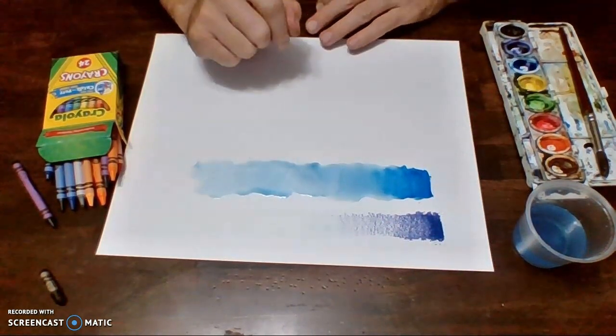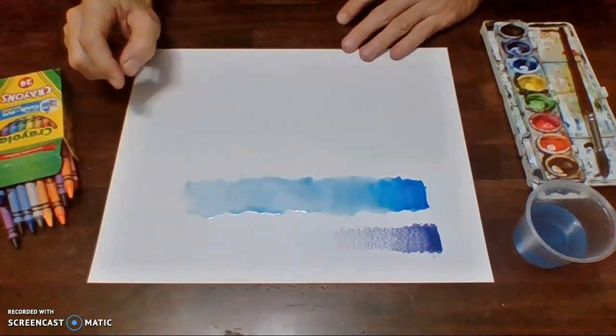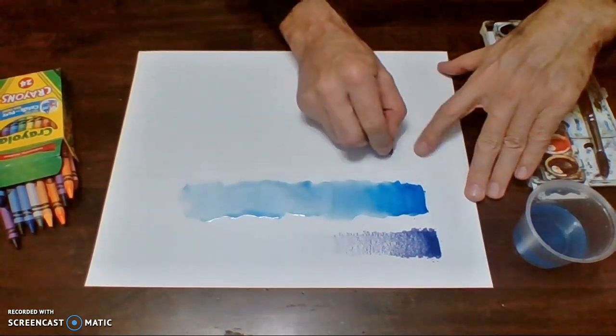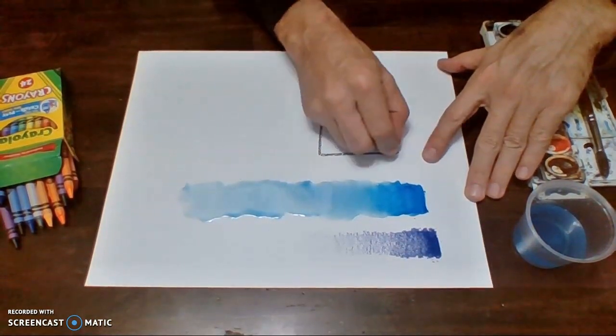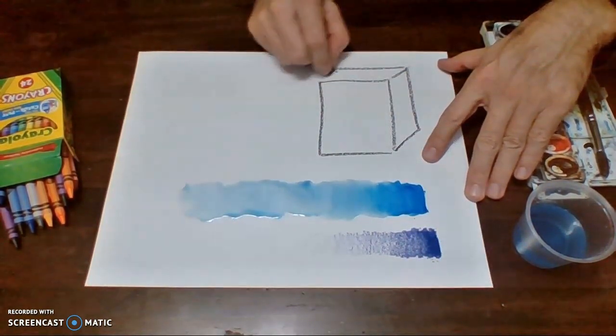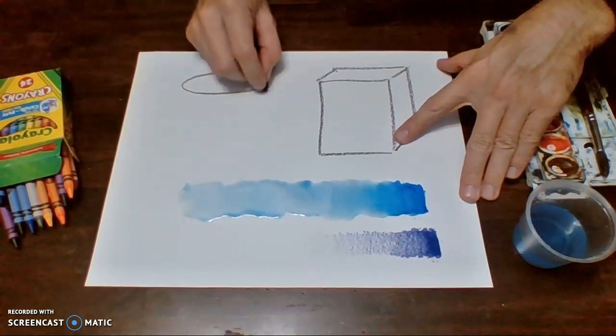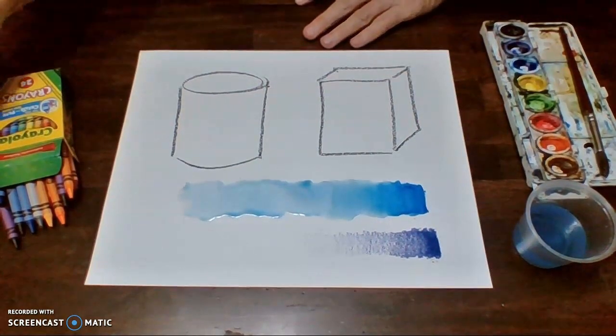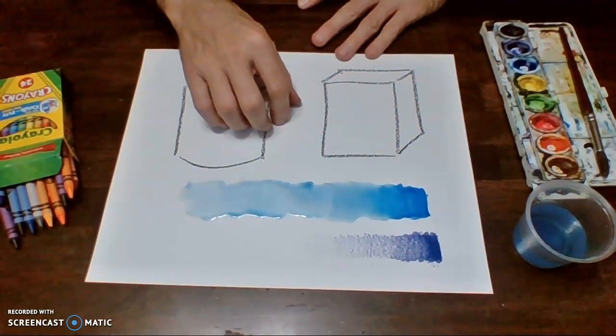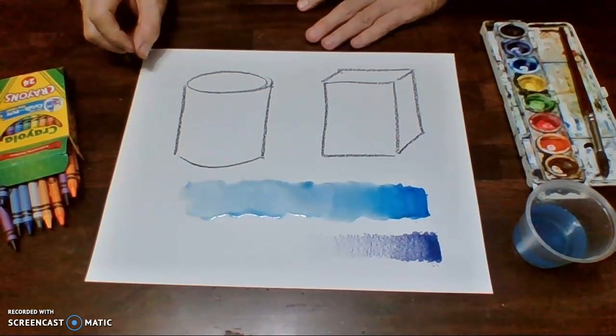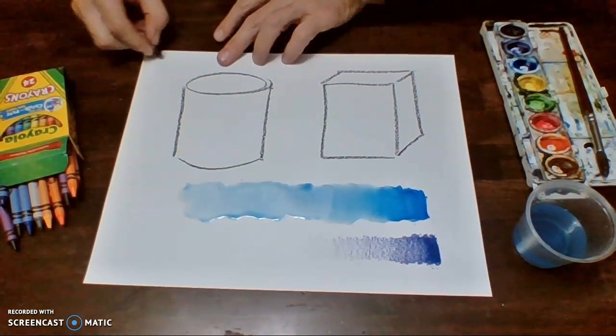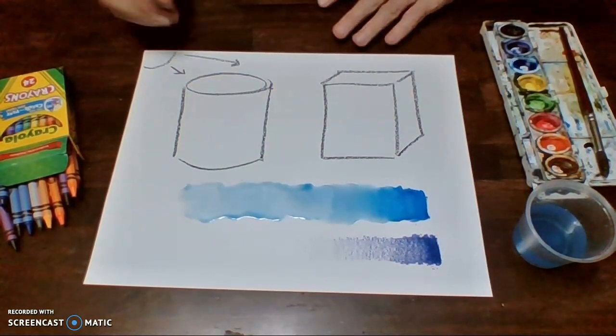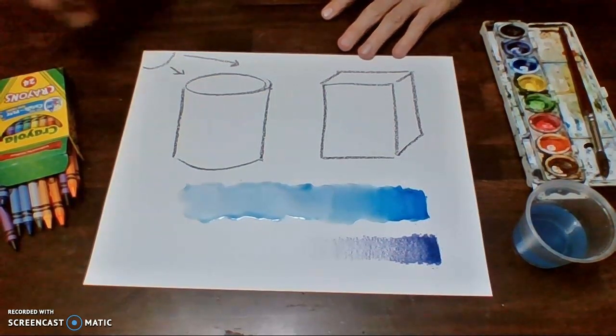Now, if you finish doing your value scales, we're going to move on to why we need value scales. We're going to make a value scale because we're going to put these values on our objects. So right here, I'm going to put a nice big rectangular prism. And then over here, I'm going to put a nice big cylinder. So I got the two forms that we talked about last time. Now, how in the world do I color these in? Well, first, you have to know where your light is coming from. So I'm just going to go ahead and say that my light is coming from right here. And yes, it is important to know where your light's coming from because that's going to matter when we start putting on the values.